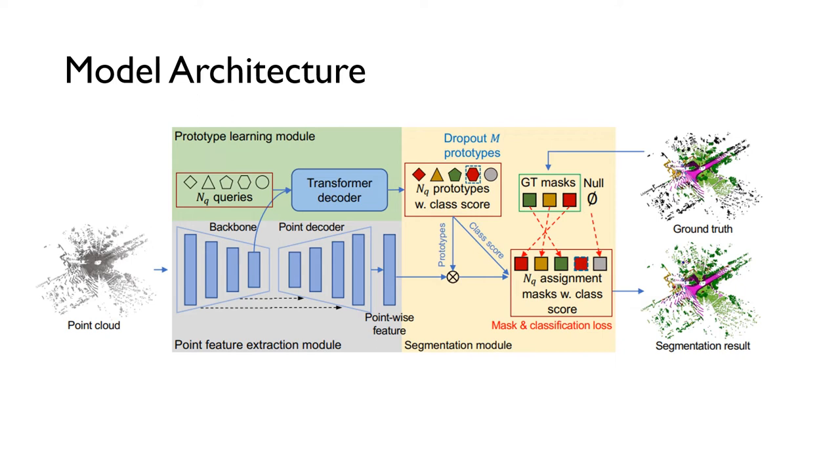During training, we randomly drop out M prototypes in each step to enable our model to produce an adaptive number of prototypes for each class.